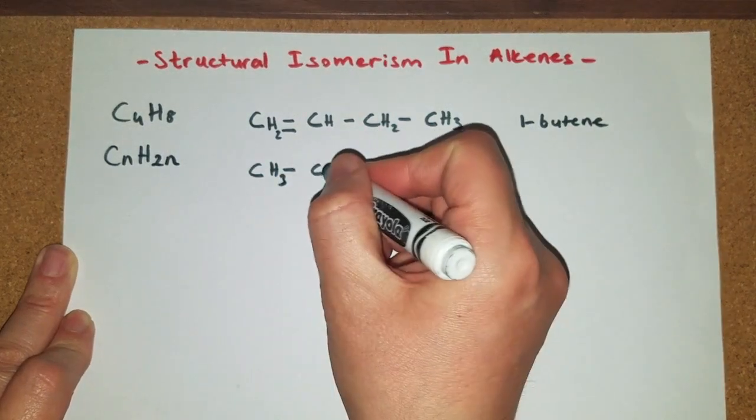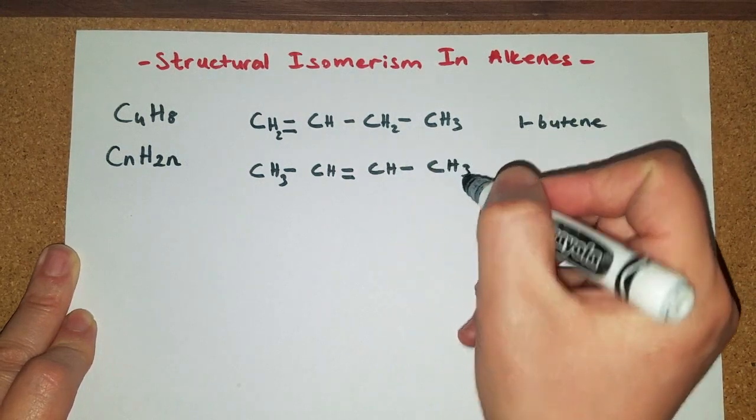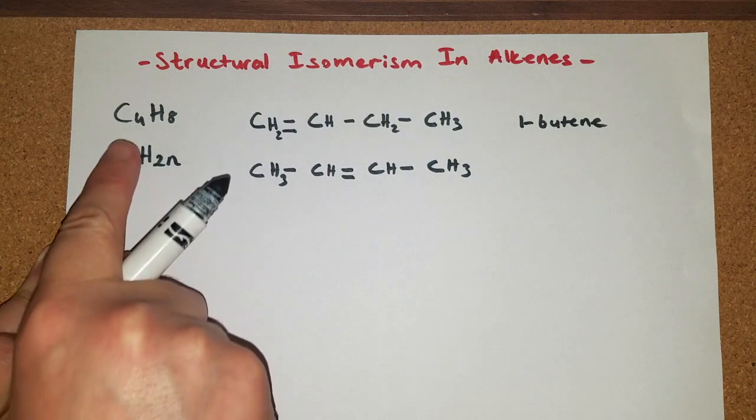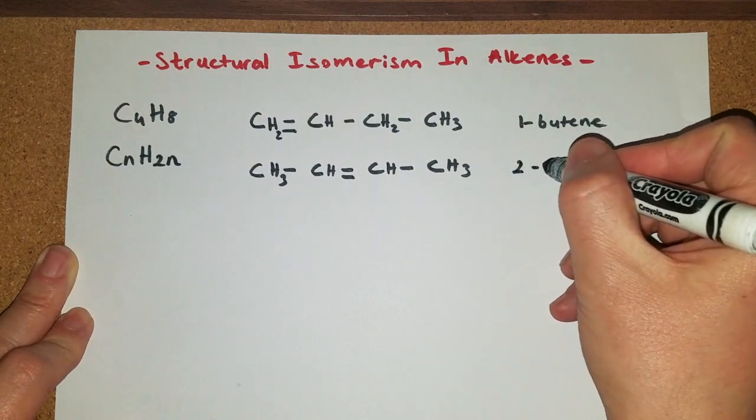Then it's gonna be CH3, CH, CH, CH3. Now this one also does have four carbons and eight hydrogens. This is called 2-butene.